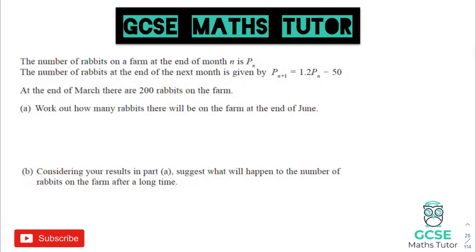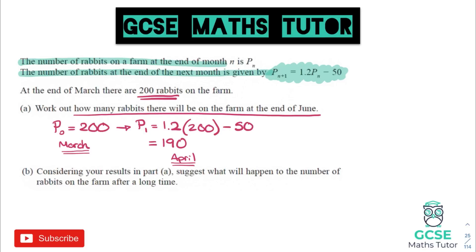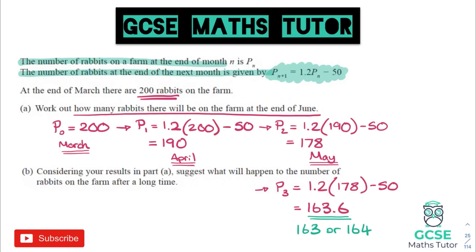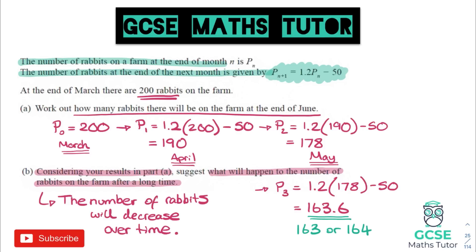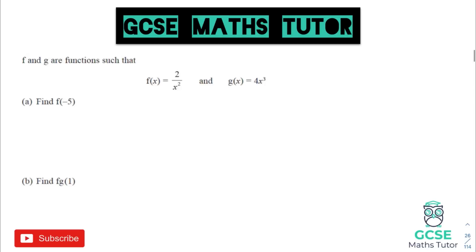When looking at iterations, read the formula carefully — you're just substituting a number in and repeating that process. Here we had a formula and started with 200. Substitute that in, find the value for the following term, then keep substituting that number in until you reach the final value it's asking for. As always, read any part b questions carefully and make sure you answer them.